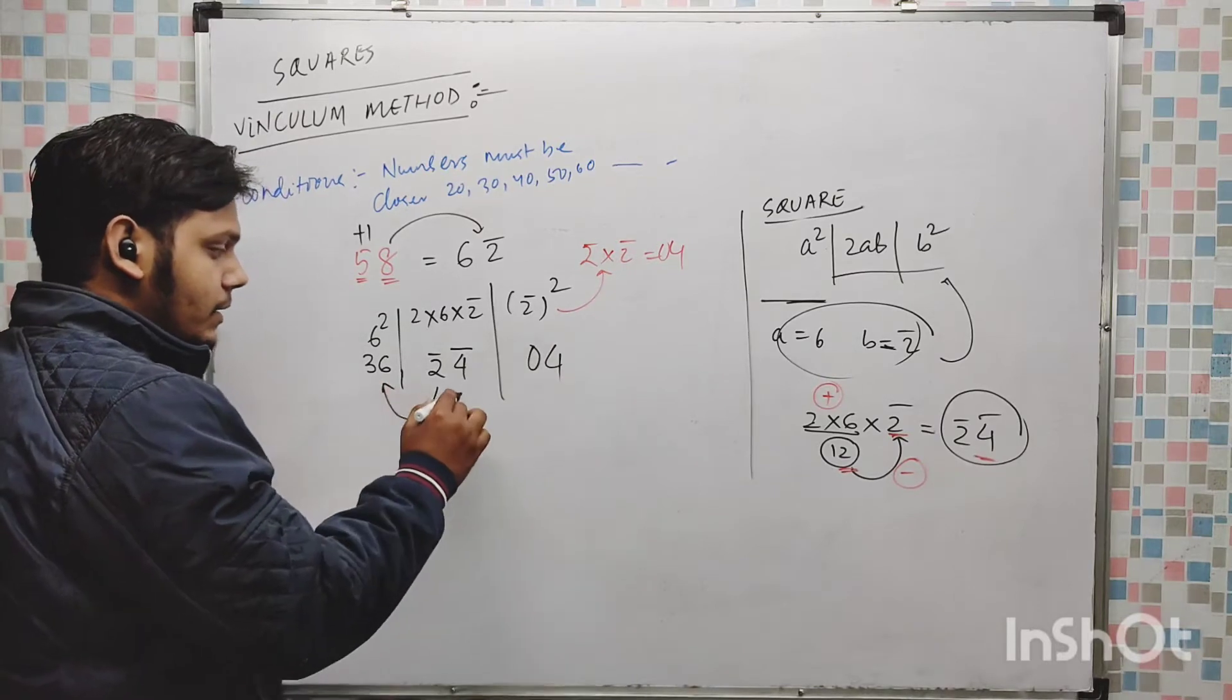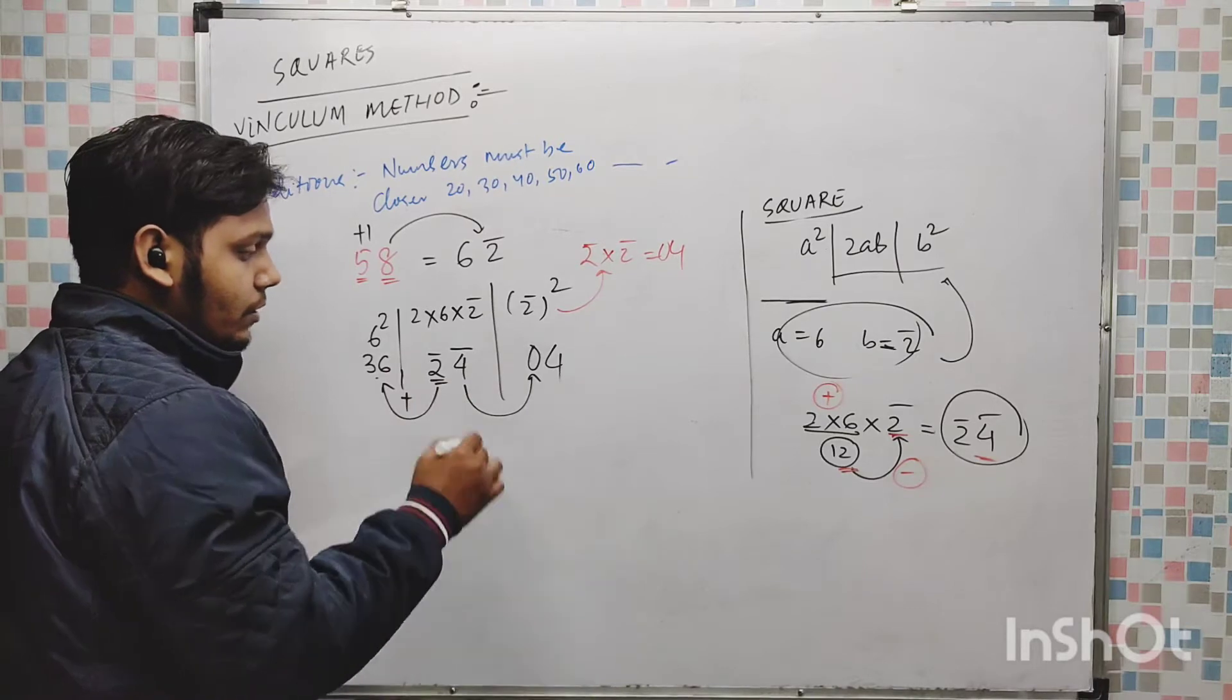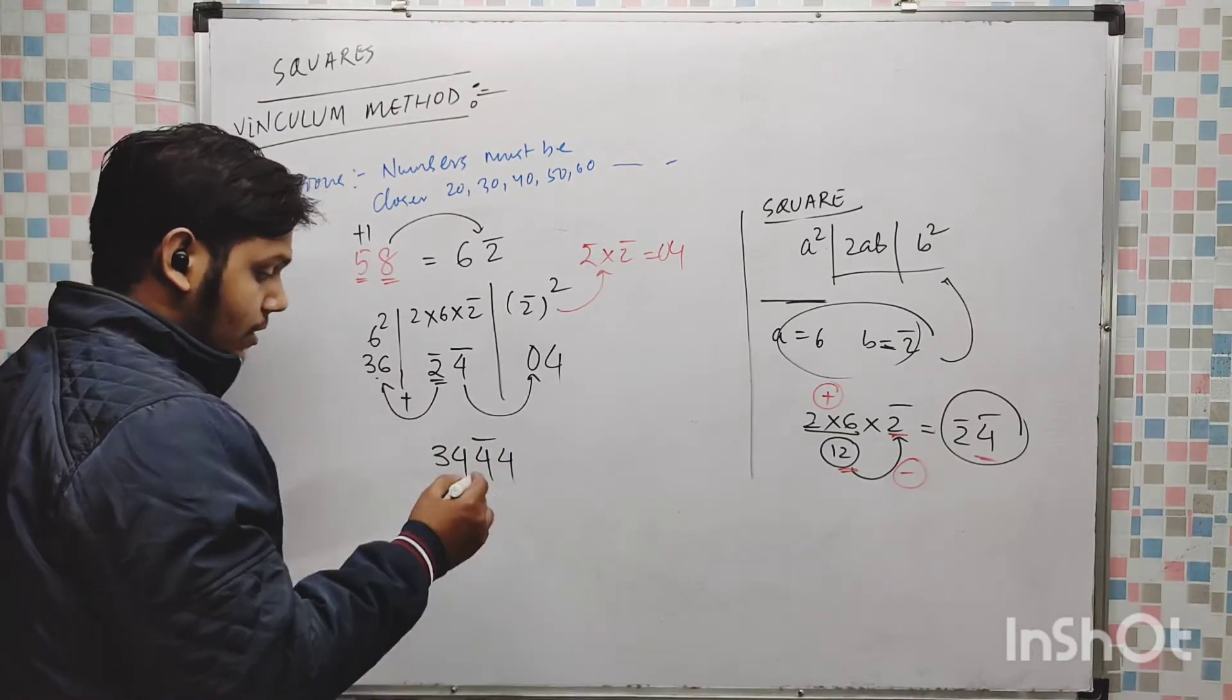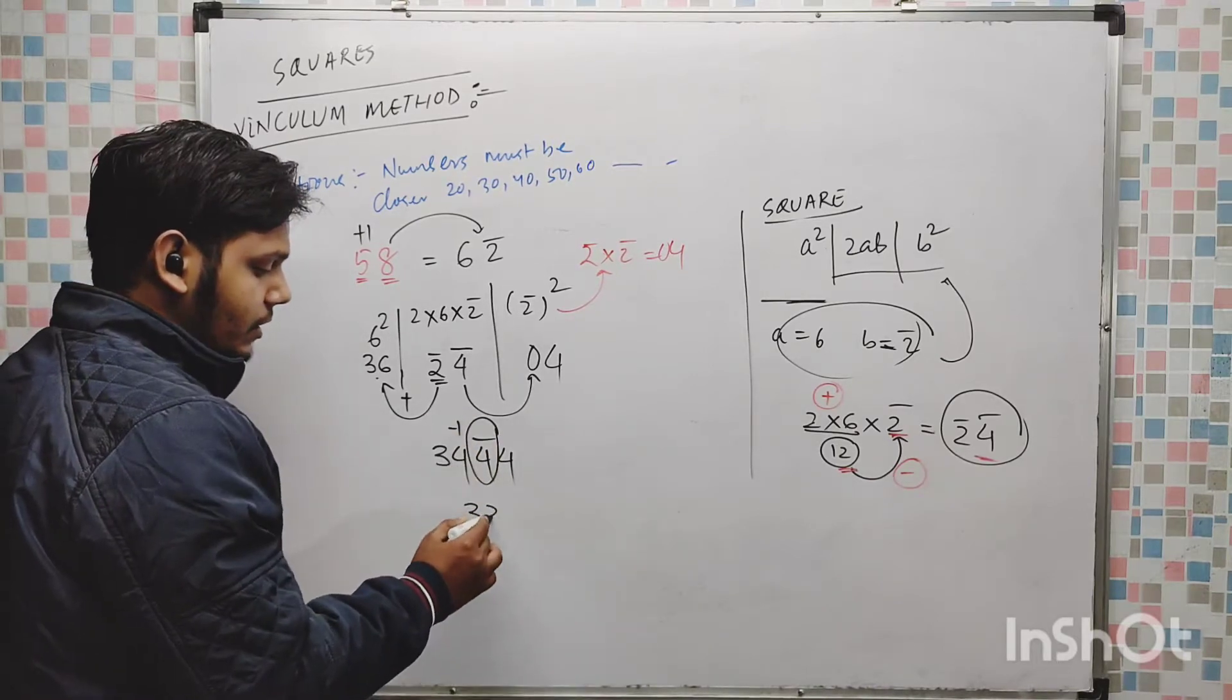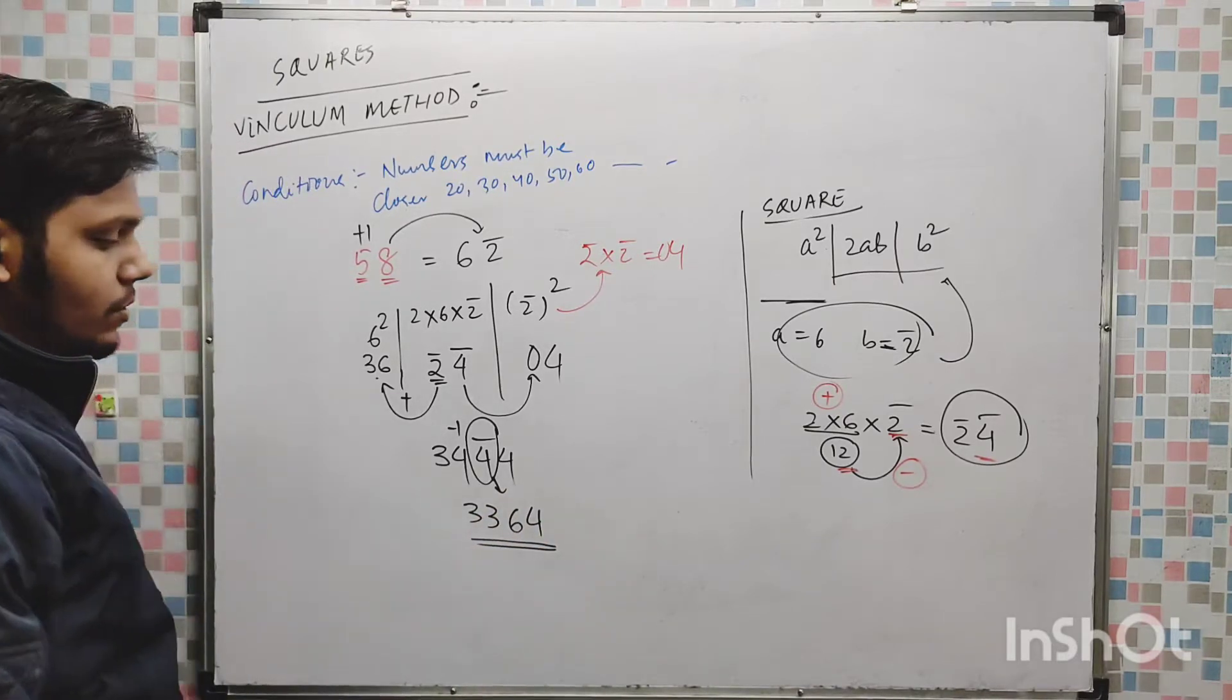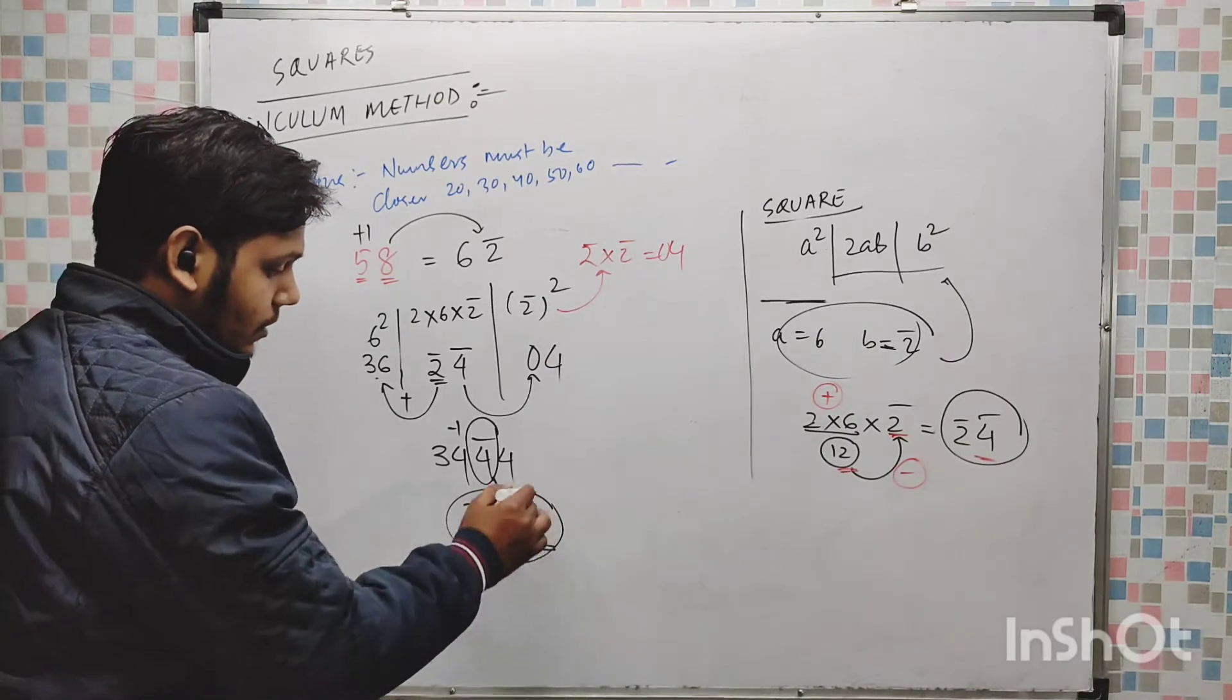Now we have to balance. 36 minus 2, 34, 4 bar and 4 bar and here 4. As we are having vinculum here, so this number will be decreased by 1, 3. 3, 4 complement is 6 and 4. 3364 is your answer.